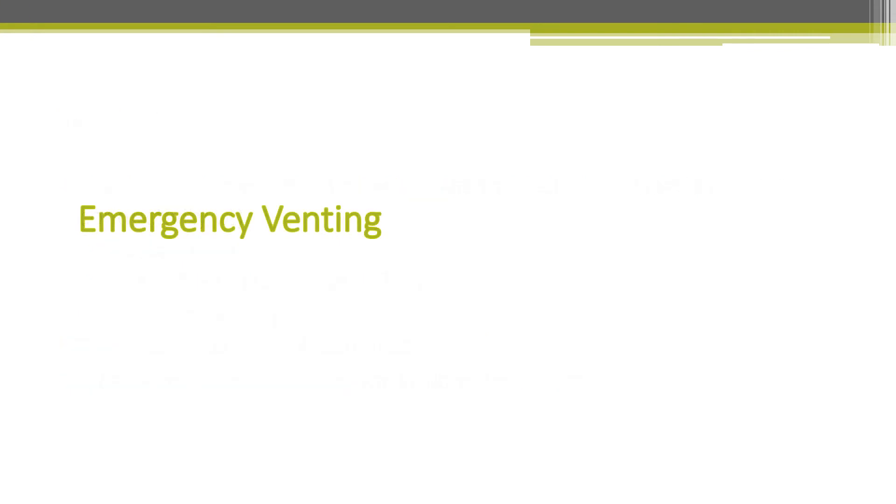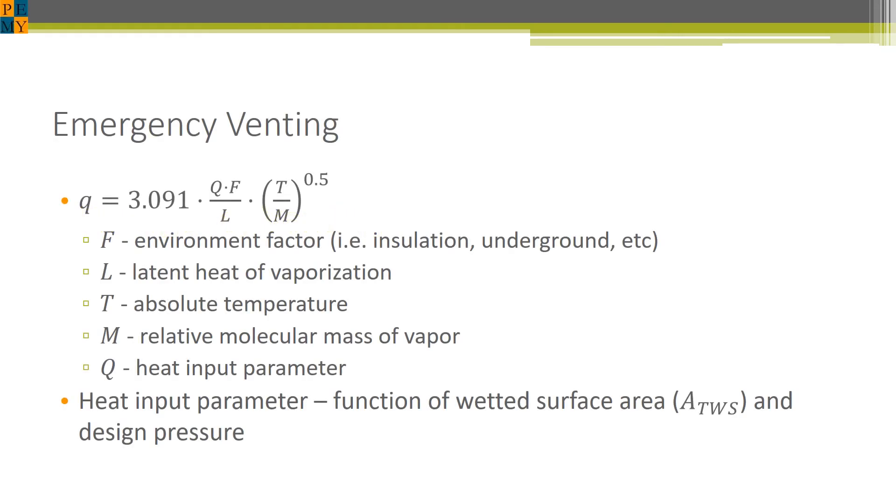That's it for normal venting. We will now consider the condition of emergency venting. For emergency venting, it is a heat flux equation where we determine the amount of heat flow that's generated from that adjacent fire into the tank. We have different properties like the latent heat of vaporization, the temperature, the relative molecular mass, and the heat input parameter, which is a function of the wetted surface area of the tank and the design pressure. Essentially, how much of the tank is actually exposed to the fire. This is dependent on engineering judgment.